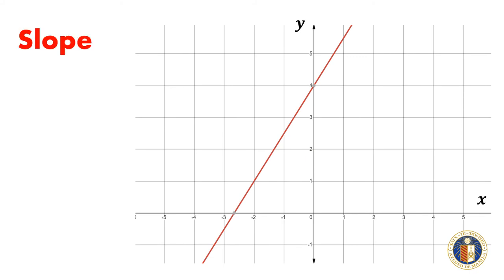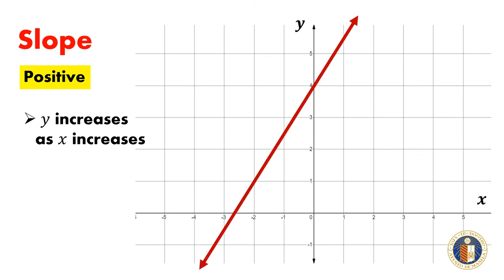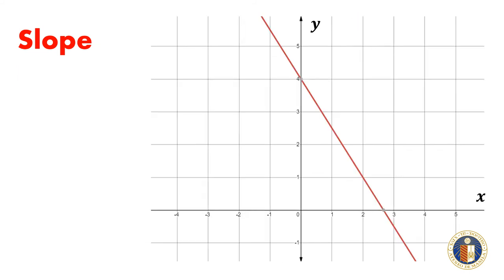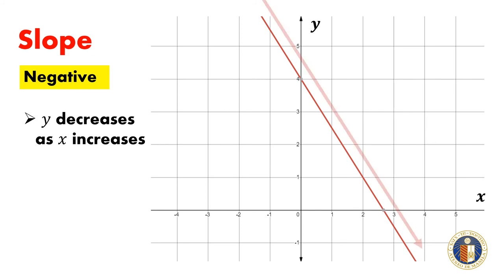The slope of a line can be positive, negative, zero, or undefined. If the slope of the line is positive, y increases as x increases, and the graph goes up from left to right. If the slope of the line is negative, y decreases as x increases, and the graph goes down from left to right.